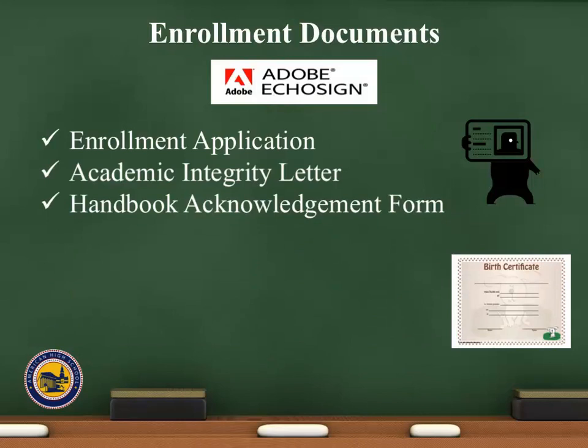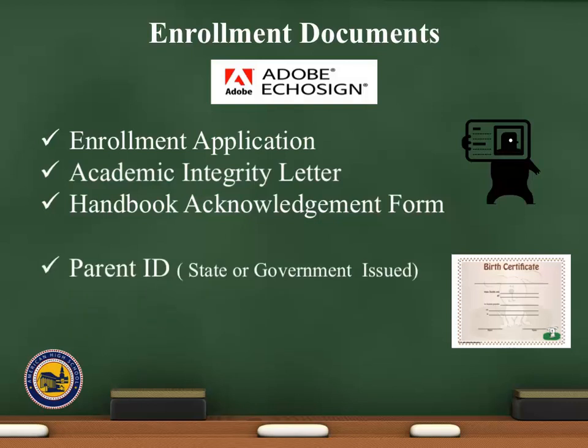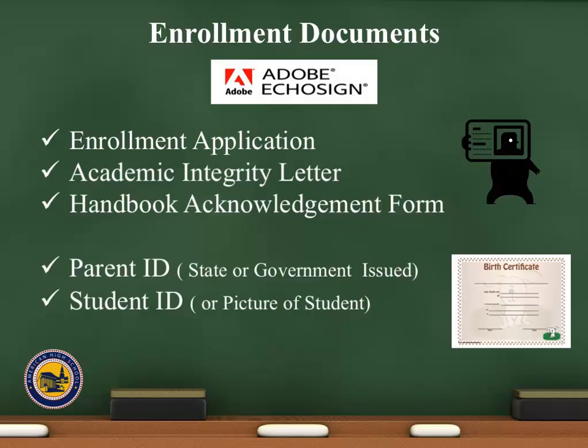You will also need to attach the following documents before submitting your EcoSign package: a copy of a parent ID, state or government issued; a copy of a student ID — if a student does not have an ID, they can use a prior school ID or a current picture; and lastly, a copy of the student's birth certificate.